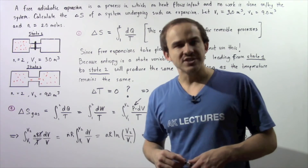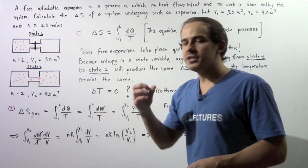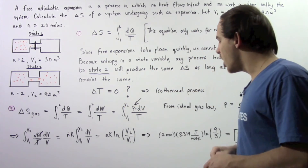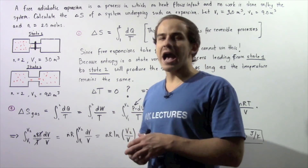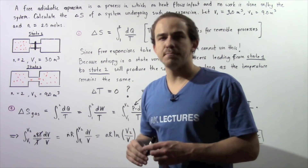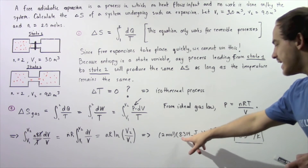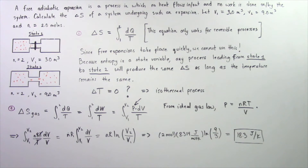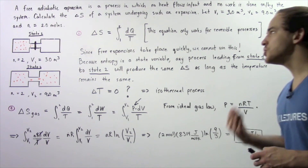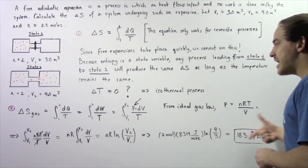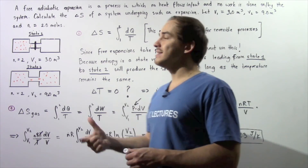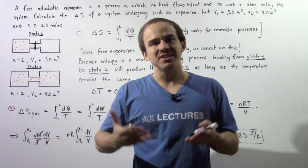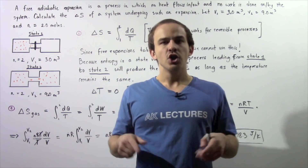Evaluating the integral gives us the change in entropy: N times R times the natural log of V2 divided by V1. Plugging in the values — 2 moles times 8.314 joules per mole·Kelvin times the natural log of 9 divided by 3 — gives approximately 18.3 joules per Kelvin. This is technically calculated for an isothermal process, but because entropy is a state variable, the change in entropy is exactly the same for the free adiabatic expansion, since the change in temperature is zero in both cases.